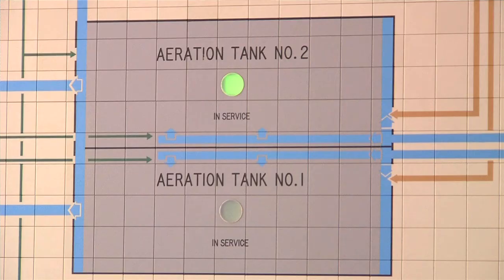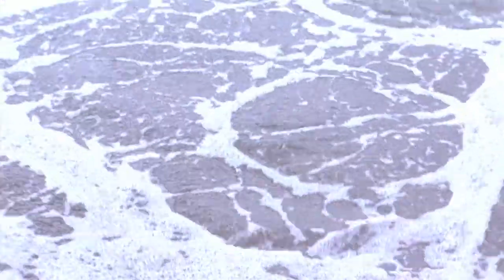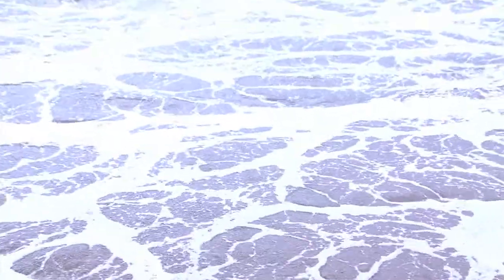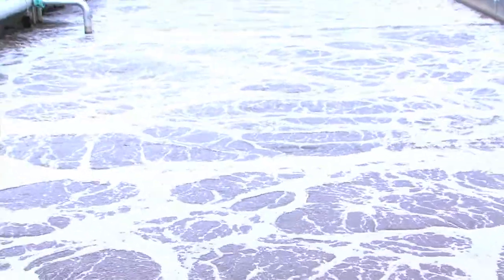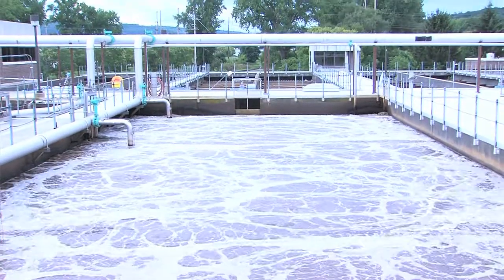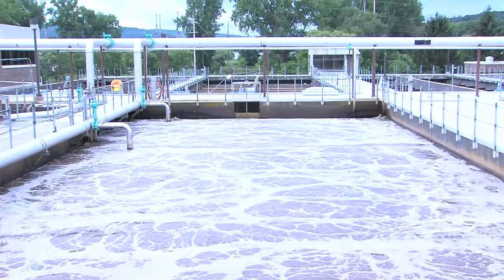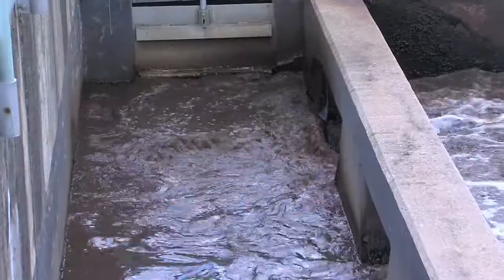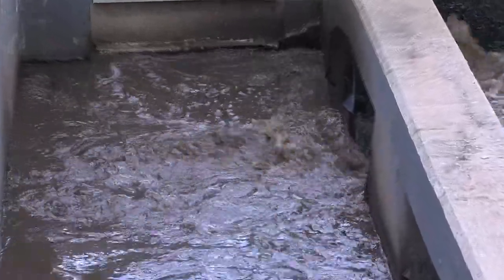Secondary treatment begins in the aeration tank. The pollutants in primary effluent are actually nutrients for bacteria and other microscopic life. The aeration tank is loaded with these bacteria — more than a million in a single drop. You can see a dramatic color shift from murky coming out of the primary tank to a rich brown in the aeration tank.